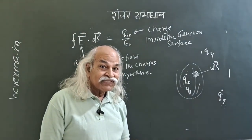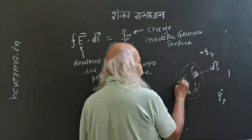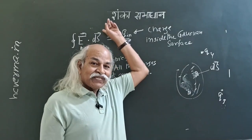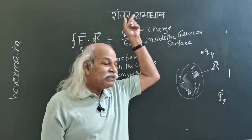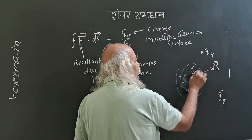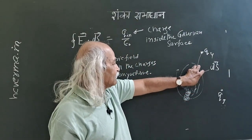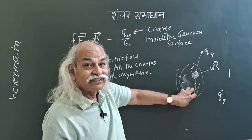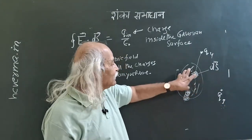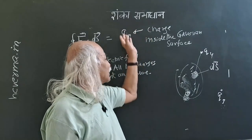Why? Because if you take an outside charge and consider only the electric field due to that charge, and use it on the left-hand side, that will be zero. Because if you have a closed surface and you have an area element here, you also have elements on the opposite side where the field crosses through. So E dot ds is positive on one side and negative on the other side. Therefore, this total flux because of the outside charges is zero, and only the inside charges will give you the flux equal to inside charges divided by epsilon naught.